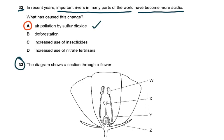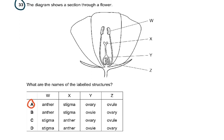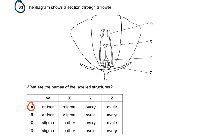Question 33: The diagram shows a section through a flower. W is the anther, X is the stigma, Y is the ovary, and Z is the ovule. So the answer was A.